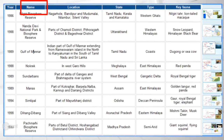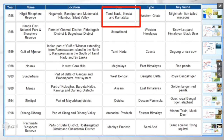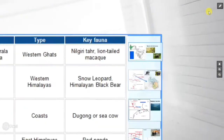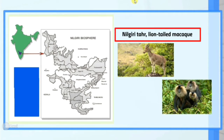The first is Nilgiri Biosphere Reserve. It is located in Tamil Nadu, Kerala, and Karnataka. If you look at the map, the blue region shown is the Nilgiri biosphere. Its main key fauna are the Nilgiri Tahr and the Lion-tailed Macaque.